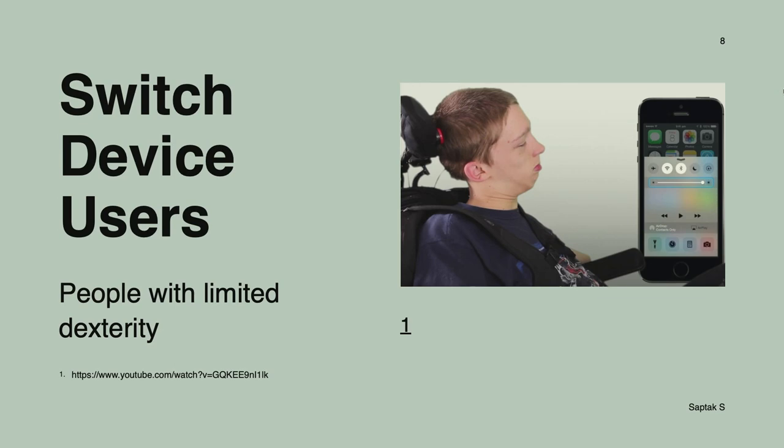Switch device users — this is very similar to keyboard users but even more limited. It's for people with limited dexterity. A switch device is like a keyboard, but it has only two keys: one key is used for scrolling through the website (like the tab key on a keyboard), and the other is used for selecting — like an enter key or a space key.